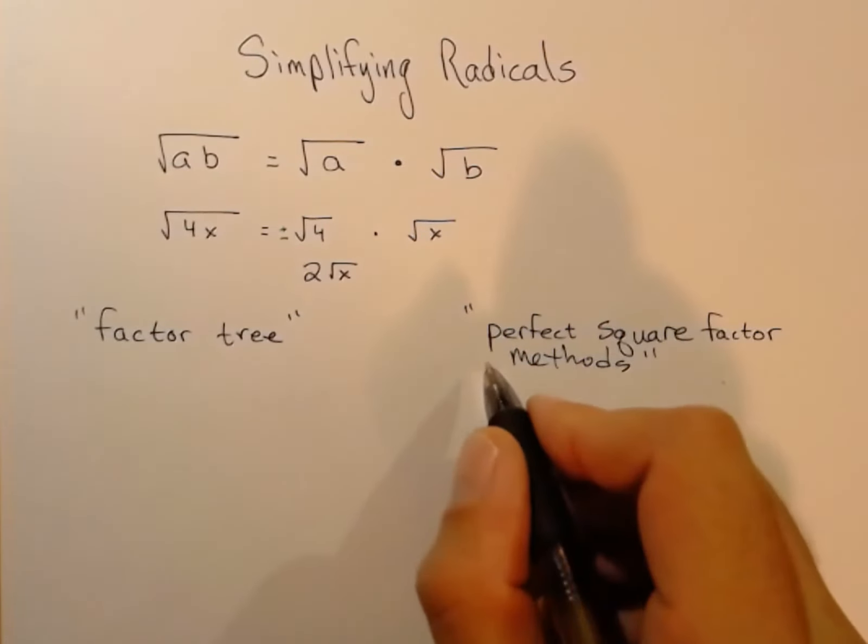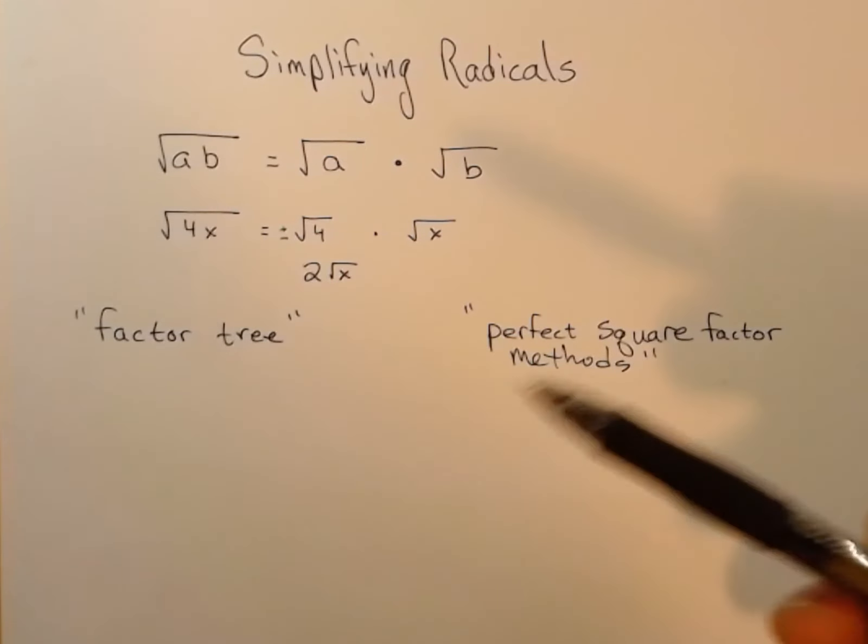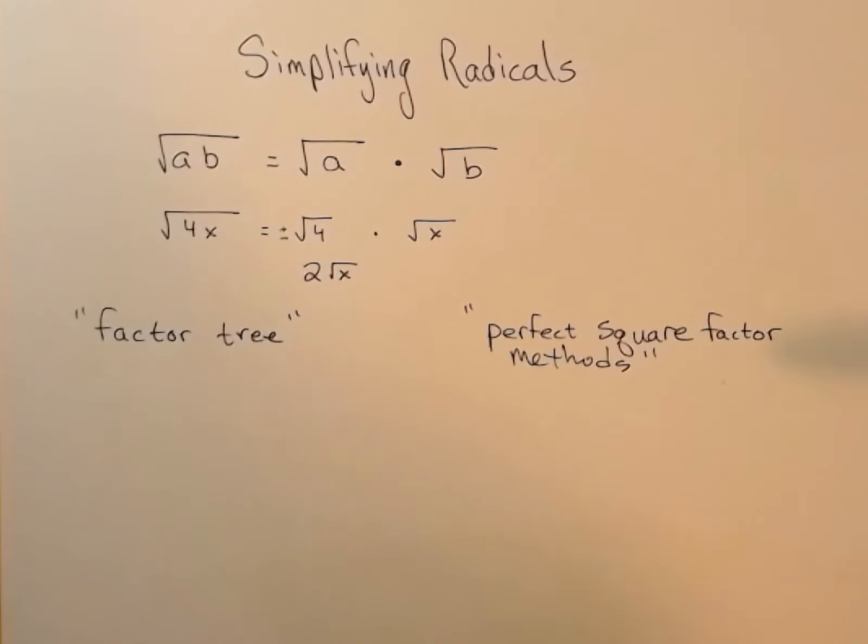First, the factor tree method. The factor tree method is a little slower, but students typically feel more comfortable with it. The perfect square factor method is quicker, but takes a little more getting used to.